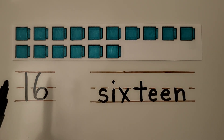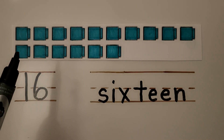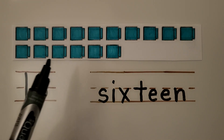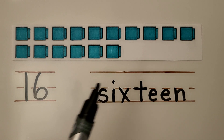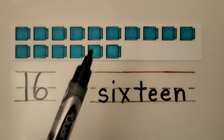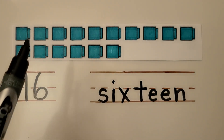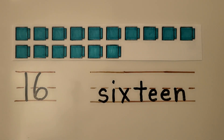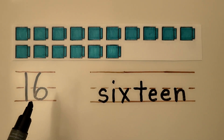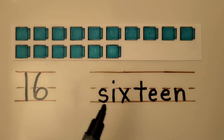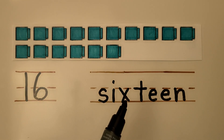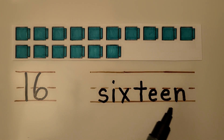There are 6 cubes in the bottom row: 1, 2, 3, 4, 5, 6. There are 16 cubes in all. We have a 10 and 6 more. This is the number 16 — it's a 1 and 6 next to each other. Here's the word 16: S-I-X-T-E-E-N. 16.